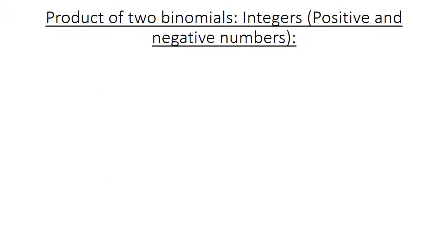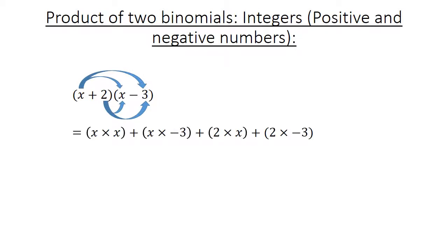Product of two binomials, positive and negative numbers. For example, the first bracket is (x plus 2) and the second is (x minus 3). We multiply each term: x times x, plus x times negative 3, plus 2 times x, plus 2 times negative 3. This equals x squared minus 3x plus 2x minus 6. Combining like terms: negative 3x plus 2x equals negative x, giving x squared minus x minus 6.